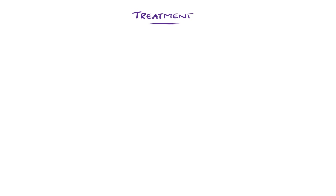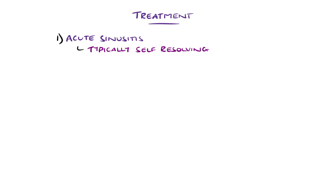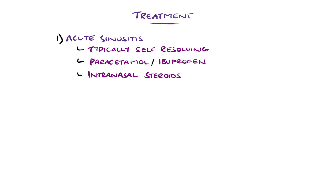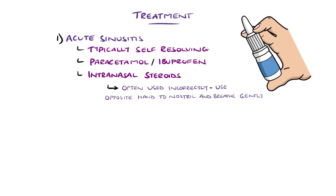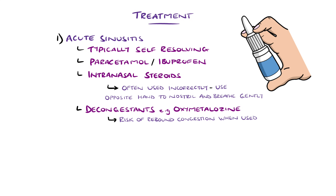Acute viral rhinosinusitis is generally self-limiting, with symptoms tending to improve after three to five days. Supportive treatment in the form of over-the-counter analgesia like paracetamol or ibuprofen can be helpful, as well as intranasal corticosteroids, particularly in those with congestion. However, these are often used incorrectly — they are best used with the opposite hand to the nostril, aiming slightly posteriorly and laterally with gentle inhalation. Decongestants like oxymetazoline are options, but are not recommended for longer courses beyond three to five days due to the risk of rebound congestion.